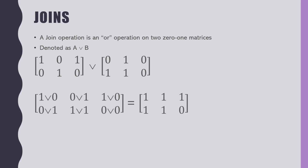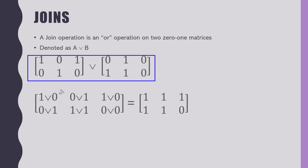Remember, think of 1 as a truth value — true — and 0 is false. If you have a true OR a false, what do you have overall? True, right? True or false together is true; only one of them has to be true. So does everybody see how the first two matrices became this one down here?